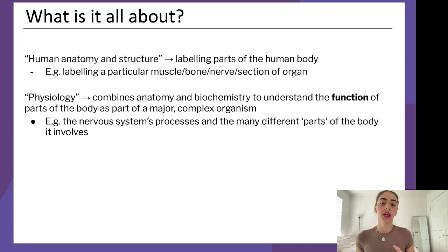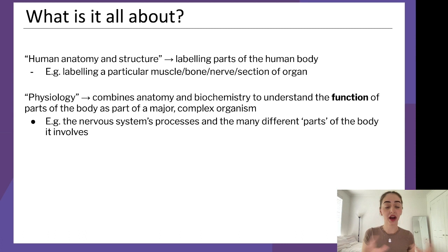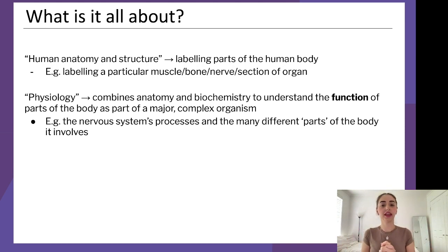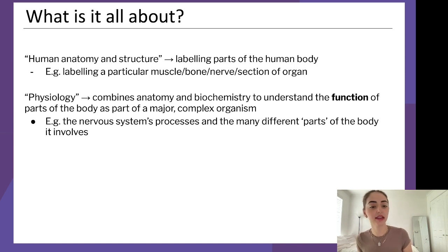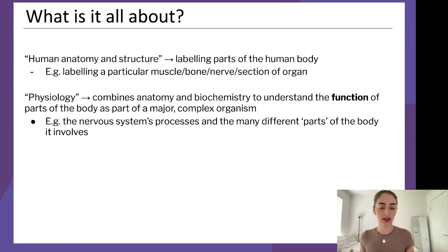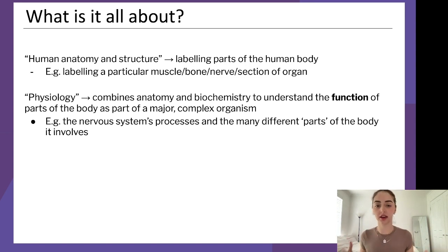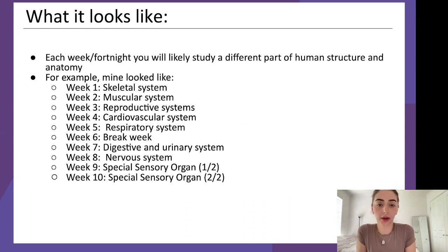Physiology is a bit different. We're talking about anatomy yes, but also the function of those parts of the body and how different parts come together to form a major complex organism. For example, physiology covers the nervous system's processes — how it actually operates, how nerve cells travel through the spinal cord and reach your fingertips. That's physiology, whereas anatomy is literally just 'this is this, this is this.'